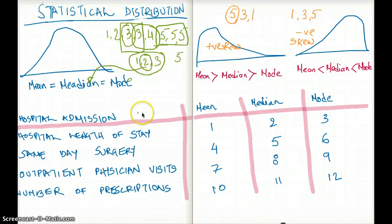In this case, the question says, what is the statistical distribution in this graph for the hospital length of stay? So in this entire graph, they're only talking about hospital length of stay. You don't have to worry about same day surgery, outpatient physician visit, number of prescriptions, or hospital admissions. The only thing that you have to worry about is hospital length of stay. So read the question carefully.